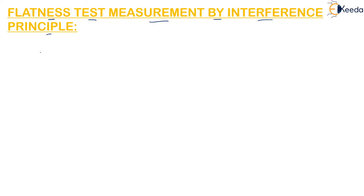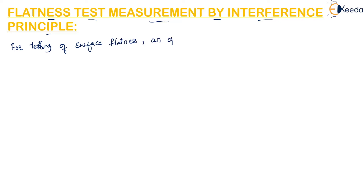So what is this optical flat? It is a disk of glass or quartz, the faces of which are highly polished and they are flat. When you measure with a micrometer you can see that the flatness is very high for this optical flat.